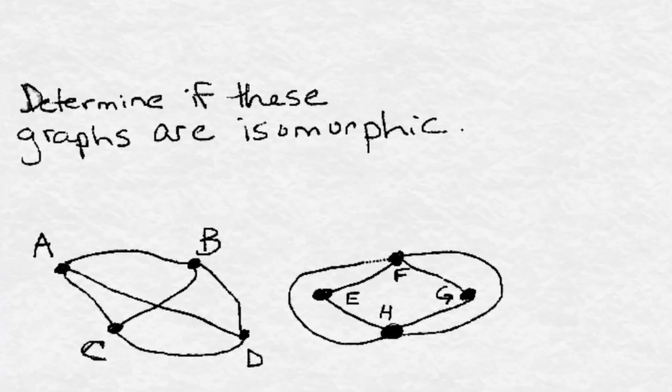Looking at the pair of graphs ABCD and EFGH, they might not look like they're isomorphic just at a glance, but it's possible that they are.